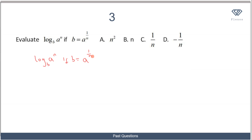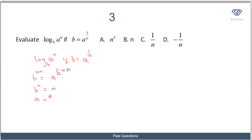First, we need to write a in terms of b. We are given that b equals a to the power of 1/n. To make a the subject, we multiply the exponents on both sides by the reciprocal of 1/n, which is n. So b to the power of n equals a, or a equals bⁿ.